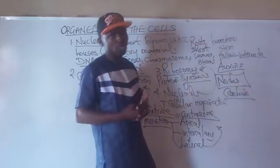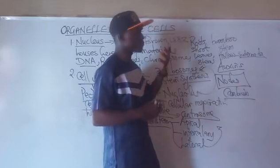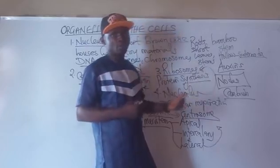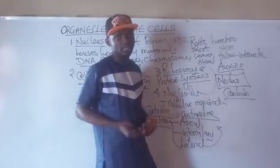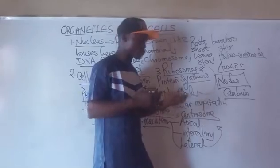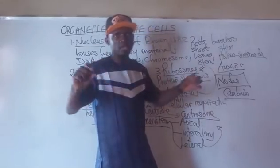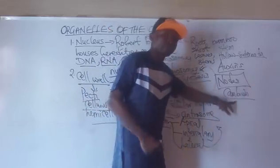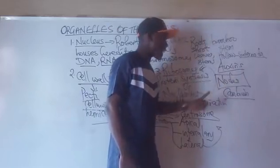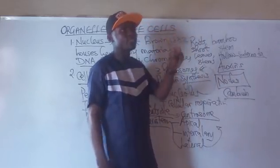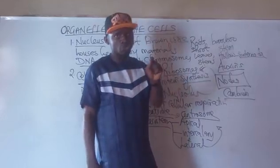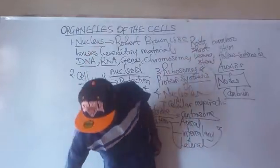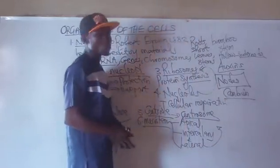Secondary growth is a type of growth characterized by the increase in diameter of the roots and stems of plants. If the diameter of the roots increases in size, that is called secondary growth. The cambium triggers it. Monocot plants lack cambium, hence they do not undergo secondary growth. Dicot plants have cambium, so they undergo secondary growth.